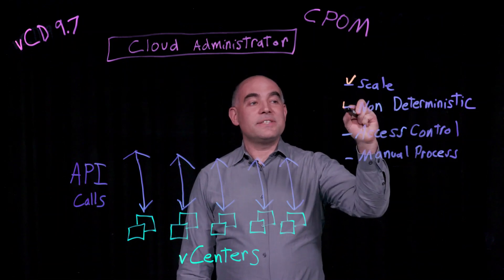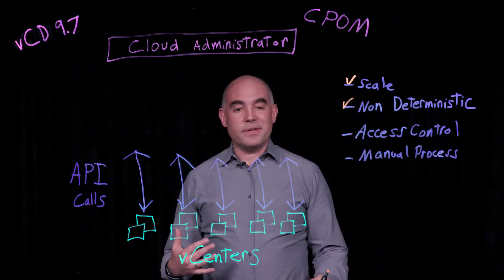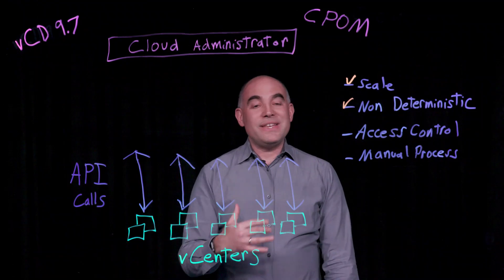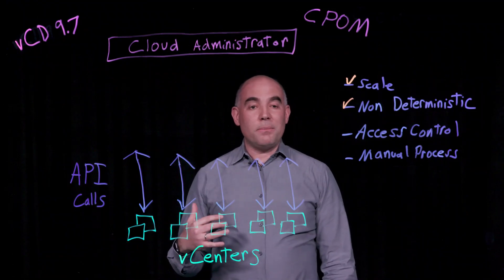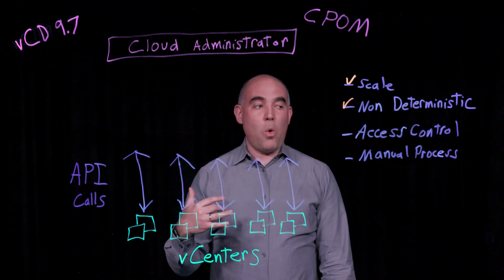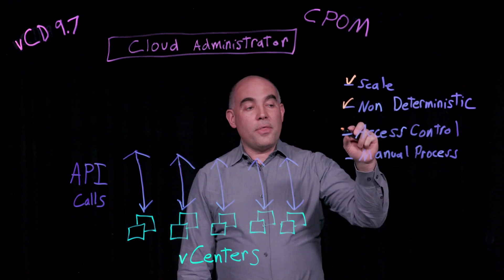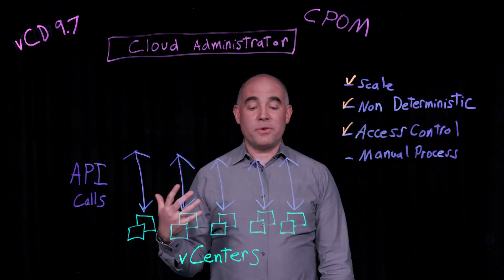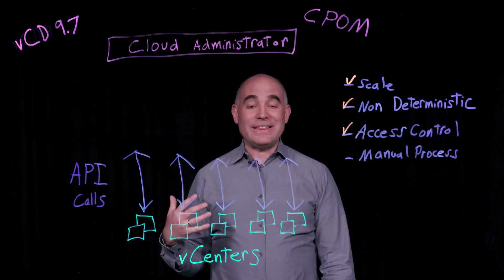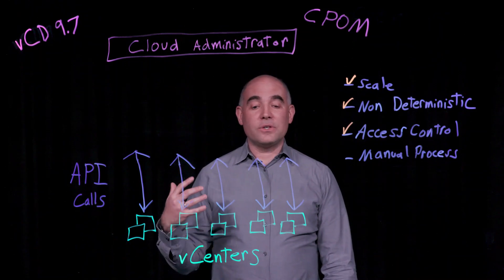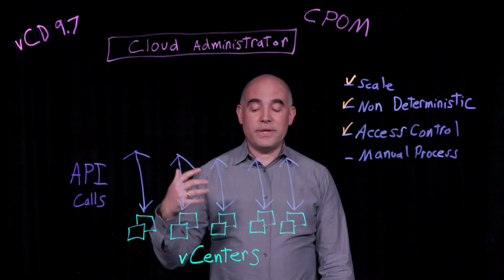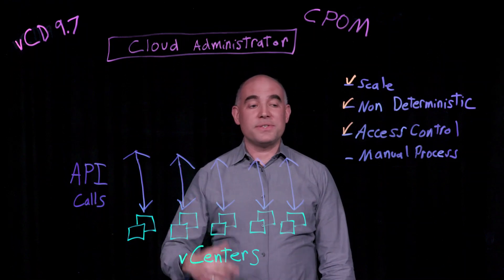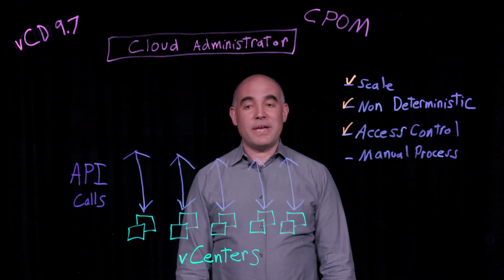The second pain point is that it's a bit of a non-deterministic process for a cloud administrator to know which vCenters are available to address API calls to or not. The third one is related to access control. The cloud service provider is very limited in how he can control who is going to access which vCenters via API calls and which functions they're going to be able to access.